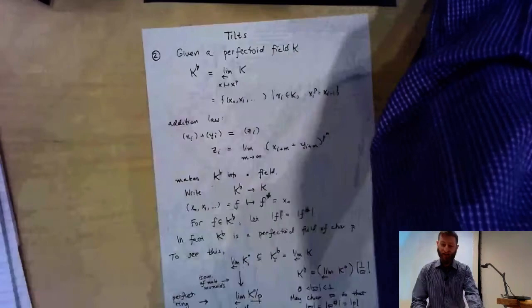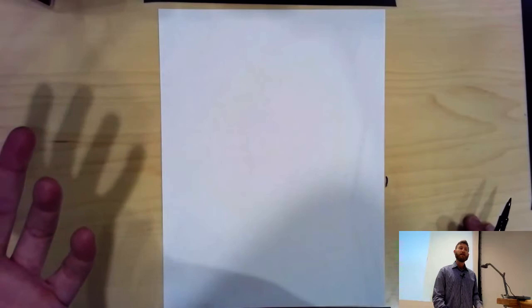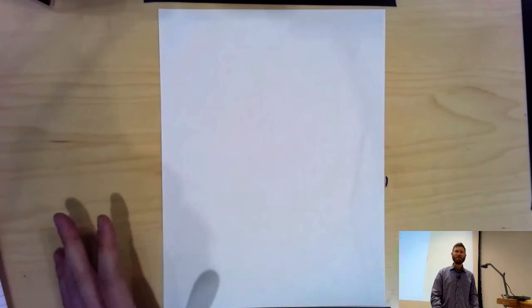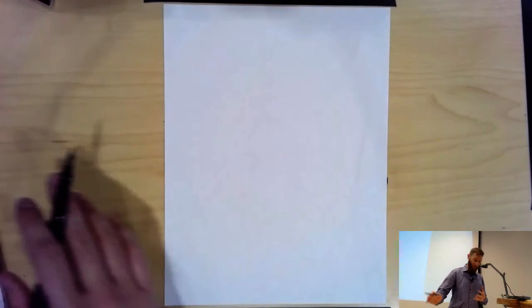Let me do an example — this is completely analogous to what Fontaine does, though the notation differs. Fontaine wrote R for this ring. Let's start with the perfectoid field obtained by adjoining all P-th roots of P to Q_P. The ring of integers is Z_P adjoin all P-th roots of P, completed. I'm going to use the other interpretation: let me mod out by P.